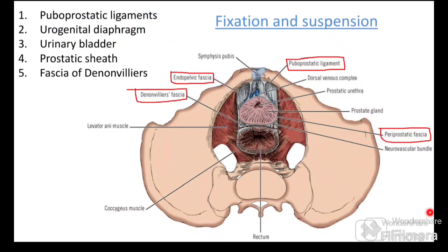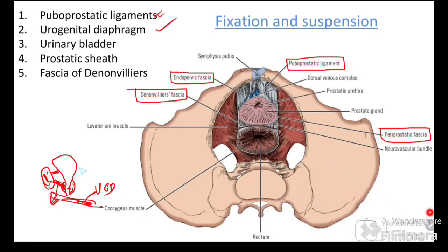The prostate is supported by several structures: puboprostatic ligaments (connecting the pubic symphysis to the gland), the urogenital diaphragm below, the urinary bladder above (sharing the false capsule), the prostatic sheath itself, and posteriorly by the fascia of Denonvilliers. These are the ligaments and supports of the prostate gland.